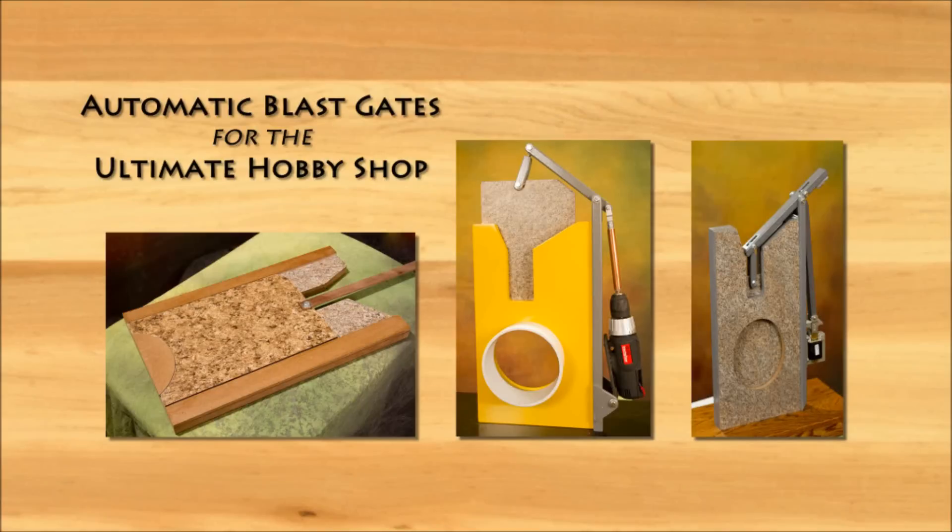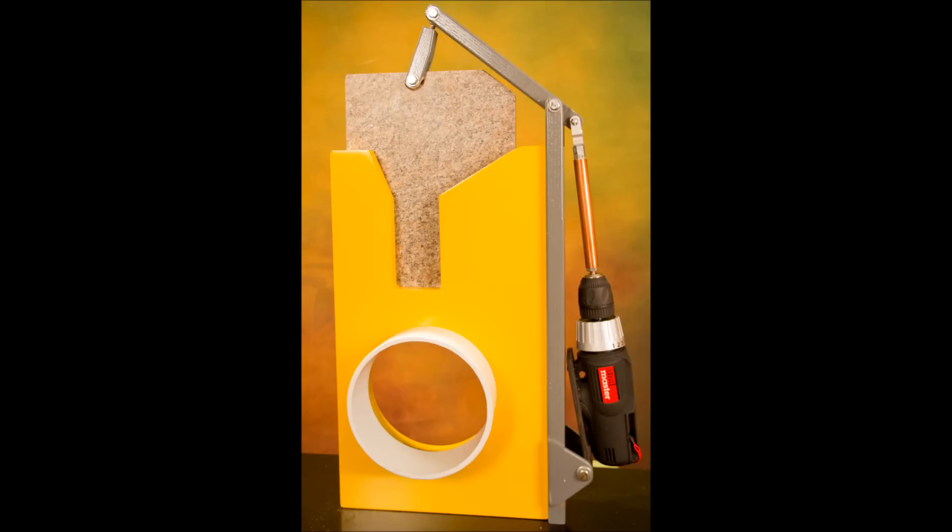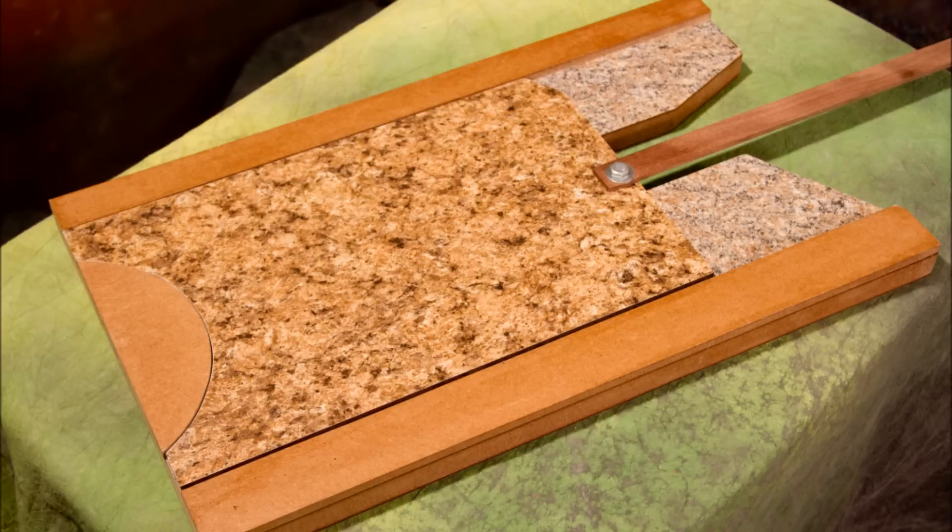Jim Halbert presents automatic blast gates for the ultimate hobby shop. This 6-inch center pull blast gate is constructed of ¾-inch MDF and lined with Formica on the inside. The slider is constructed of ¼-inch tempered masonite and also covered with Formica to prevent sticking and warping.